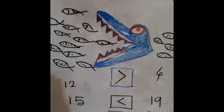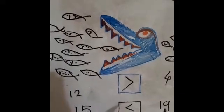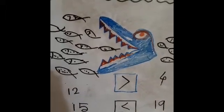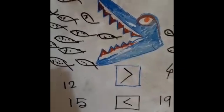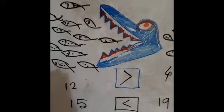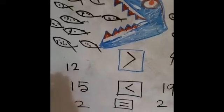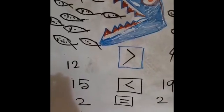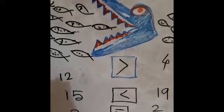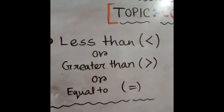In the next example, the opened portion should face the bigger number — that is the only logic. So we put less than here, as 15 is less than 19. Next, the numbers are 2 and 2. As both are the same number, we put the equal sign. Now you can easily understand what greater than, less than, and equal signs mean.